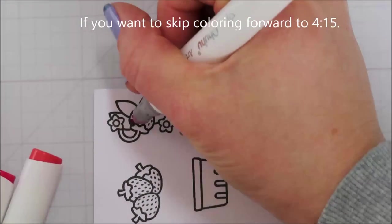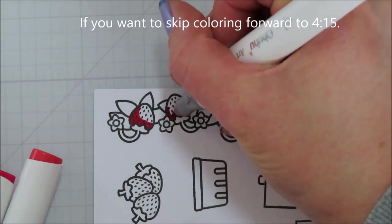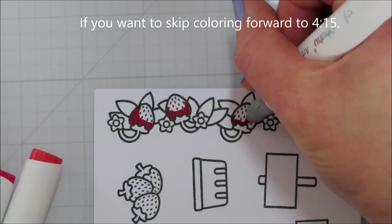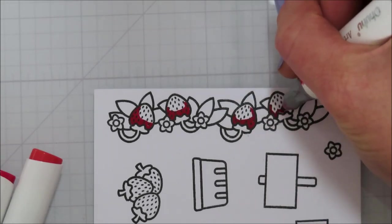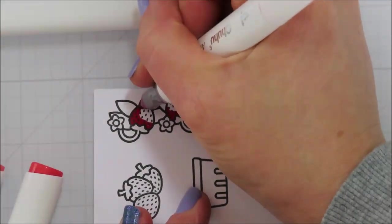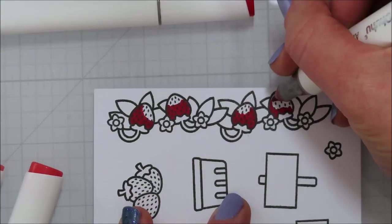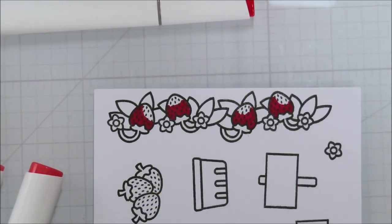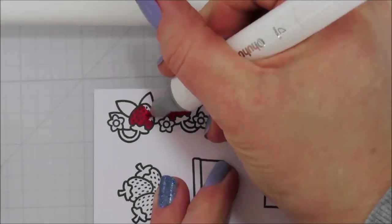I am using Ohuhu markers to color today. I colored most of my images on Saturday when I was watching the Create With Us with Jen Shrux and Kelly from Lawn Fawn. I needed a few more pieces for this card, and I'm going to show you the coloring since some people like to watch that. I'm one of those people.